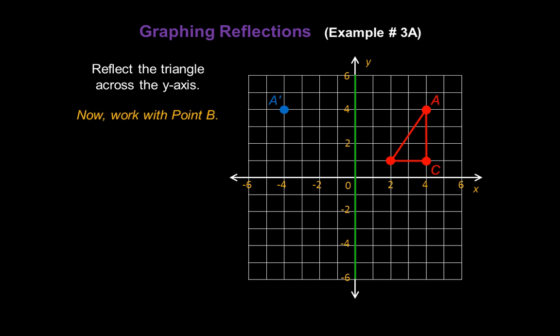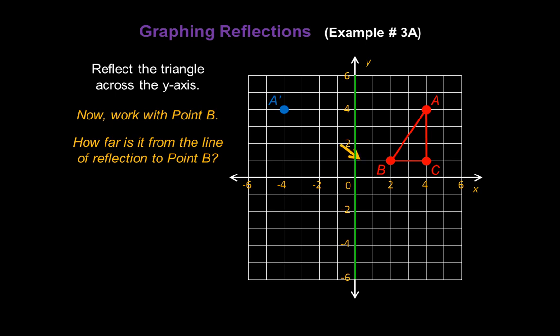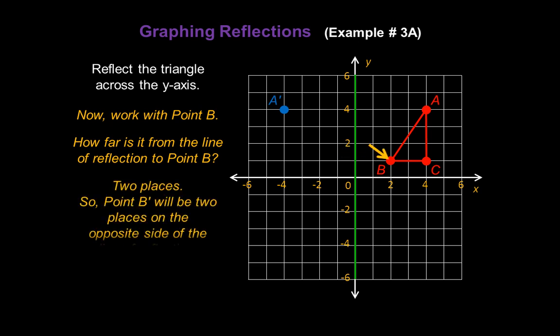Now let's work with point B in our figure. How far is it from the line of reflection to point B? We count over: two places. So point B prime will be two places on the opposite side of our line of reflection. Count over one, two places — and that's point B prime.